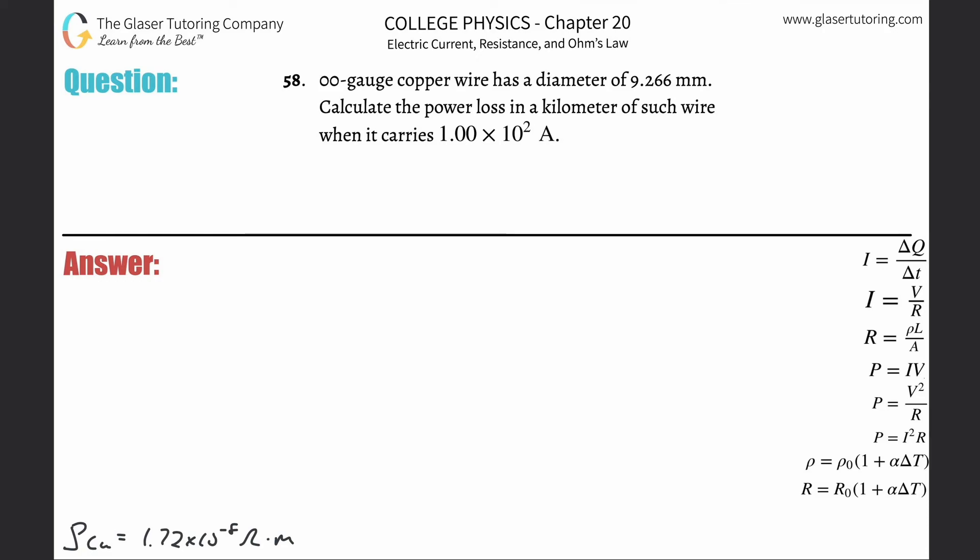Number 58. A double zero gauge copper wire has a diameter of 9.266 millimeters. Calculate the power loss in a kilometer of such wire when it carries 1 times 10 to the 2 amps.